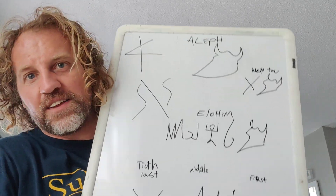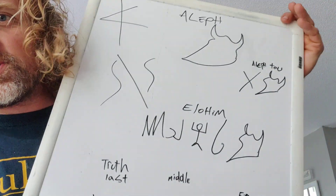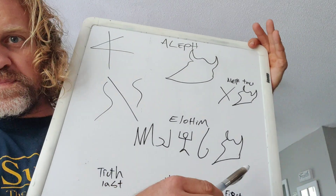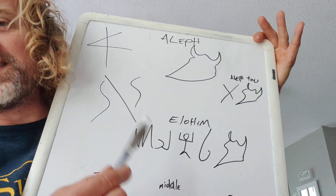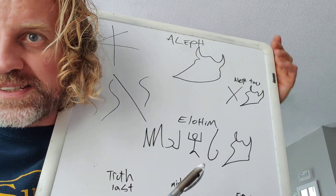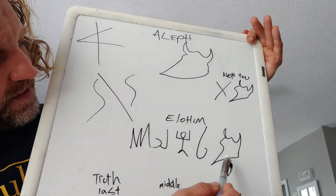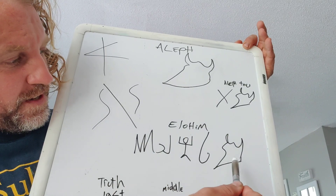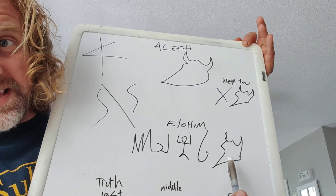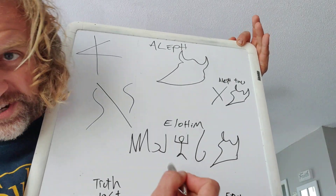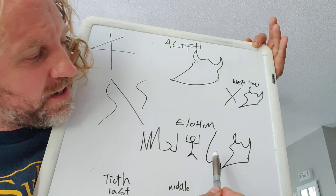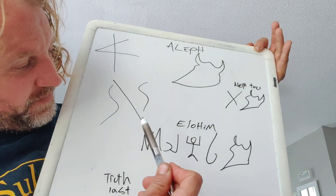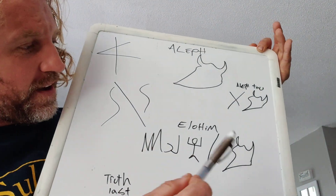Check this out. The first time it is used in the Scriptures, it's for Elohim. It's in plural — Elohim is Mighty Ones because of the plurality. So it's Aleph, Lamed, Hey, Yod, Mem — Elohim.